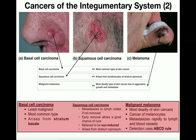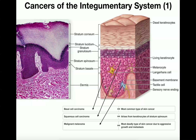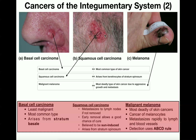The second type is squamous cell carcinoma — a cancer of the keratinocytes in the stratum spinosum. The stratum basale has the most mitotic activity, which is why basal cell carcinoma is more common. The keratinocytes of the stratum spinosum, particularly those closest to the stratum basale, still retain some mitotic activity, though not as much. Squamous cell carcinomas are less common but more dangerous than basal cell carcinomas because they metastasize very easily to the lymph nodes if not removed.